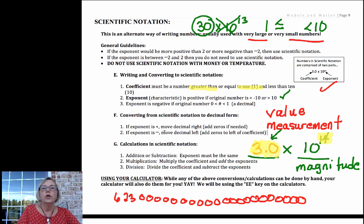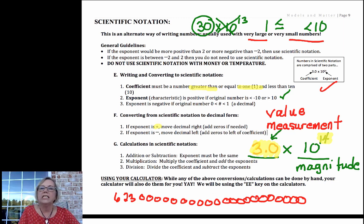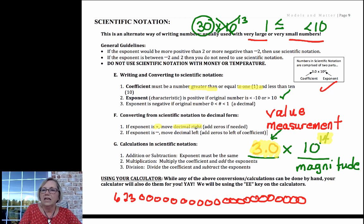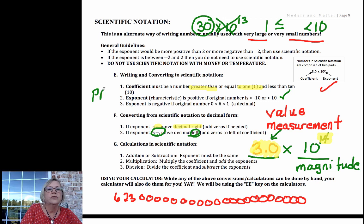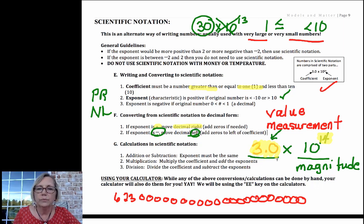Now we're going to be converting from scientific notation. If the exponent is positive and we want to get into decimal notation, we move the decimal point to the right. If the exponent is negative, we go to the left. So my PR statement: Positive is Right, Negative is Left — so none of you are left behind.